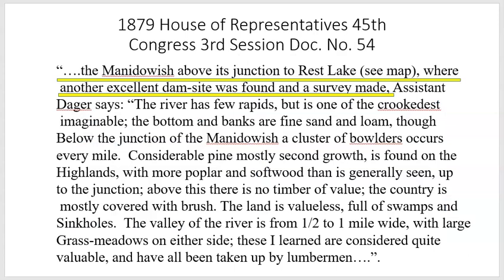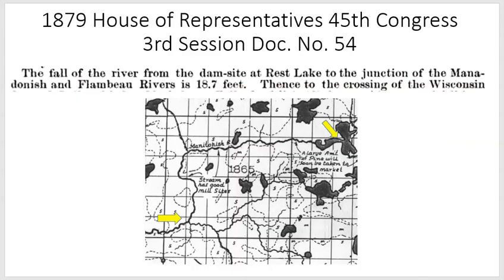In 1879, the Congressional Record noted that the Manitowish above the junction of Rust Lake was another excellent dam site, and they made an extensive survey. Enthusiasm regarding the Rust Lake Dam area began to grow. Below the dam, all the way down to the junction with the Flambeau River, shows the downstream gradient from Rust Lake as 18.7 feet. Several rapids and drops existed and were recorded by the Army Corps of Engineers.